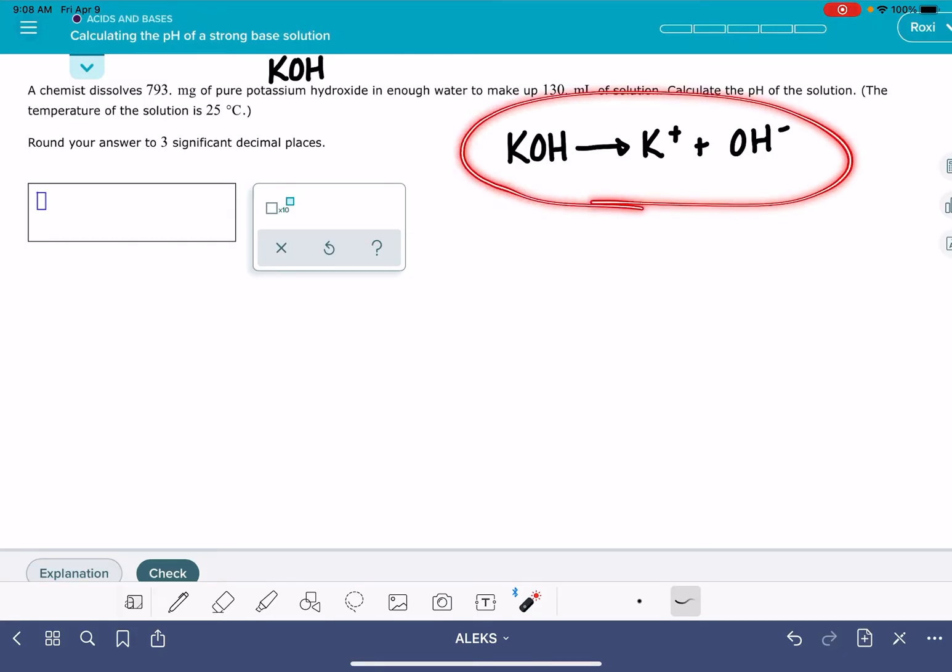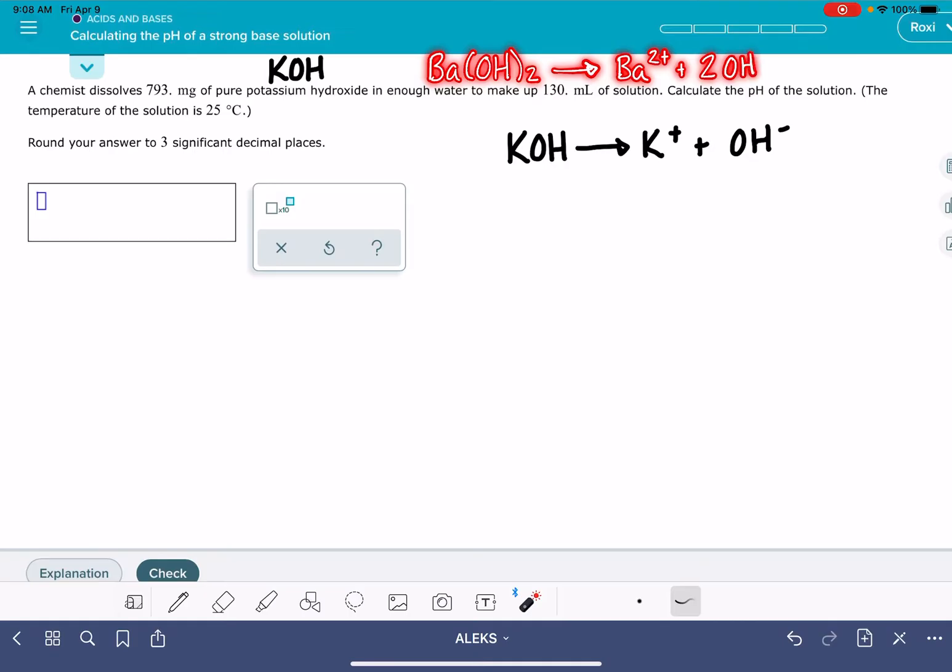Now, like I said, this might feel like an unnecessary first step. However, it is possible that Alex might give you a strong base, such as barium hydroxide, which dissociates into two hydroxide ions instead of just one. And that's going to be a really important thing to know when you're doing these calculations. You need to know how many hydroxide ions are being produced during the dissociation.